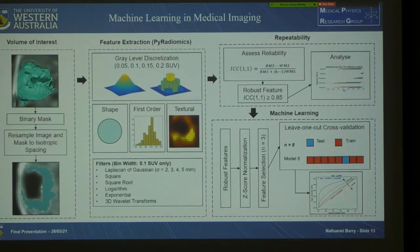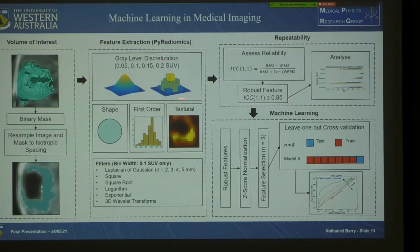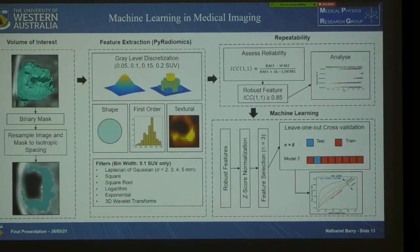We convert the volume of interest from the RT-struct DICOM format to a binary mask, then with the binary mask and PET image we undergo feature extraction using the PyRadiomics open-source software, which follows the Image Biomarker Standardization Initiative. Each image undergoes grey level discretization using four different fixed bin widths in terms of SUV. We extract shape features such as volume and surface area, first-order features including statistics such as mean, median, and interquartile range, and textural features which take into account neighbouring voxels and their intensities. We also extract features after applying various image filters using a single bin width of 0.1 SUV.